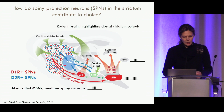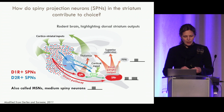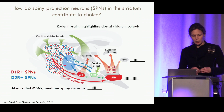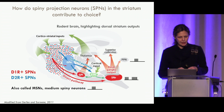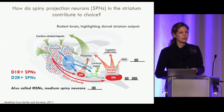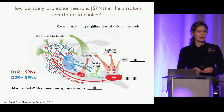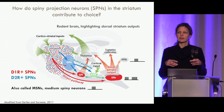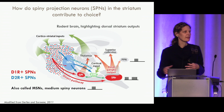The blue dopamine D2 receptor-expressing spiny projection neurons make up the indirect pathway. In the dorsal striatum these project to the globus pallidus external (GPe), which is GABAergic — so there's a double negative, two inhibitory synapses in a row. Then they project onto the subthalamic nucleus (STN), which is glutamatergic, exciting the SNr — having an opposite effect from the direct pathway. These two opponent processes converge on places like the SNr, producing opposite effects on downstream targets.